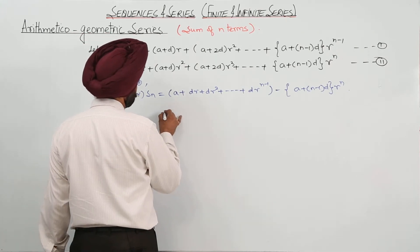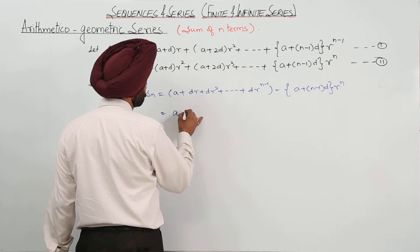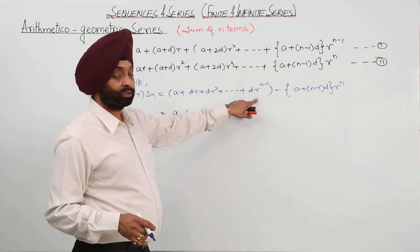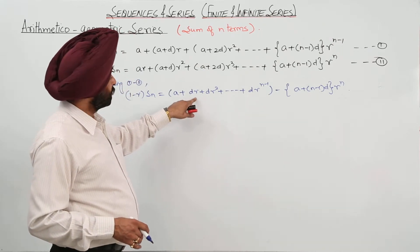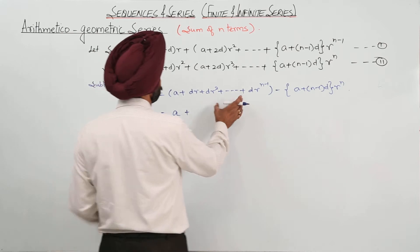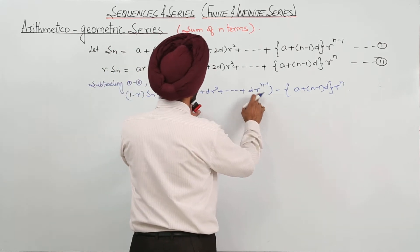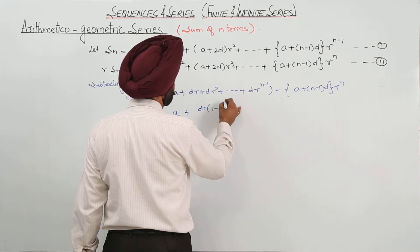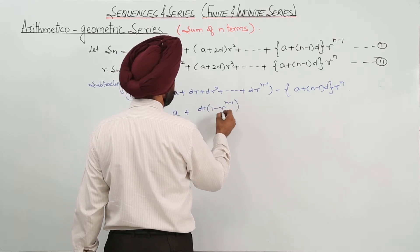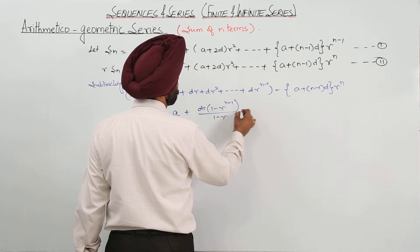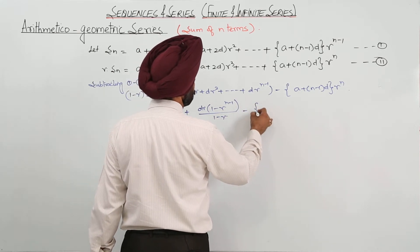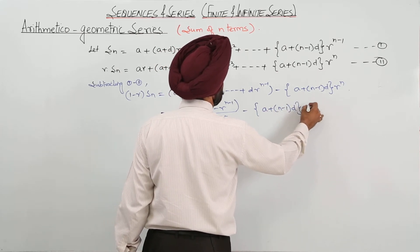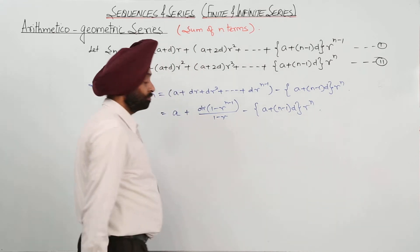Now in this expression, the first term is a as it is. After a, the remaining terms dr plus dr squared plus ... form a geometric progression series. So for that GP part, the first term is dr and we use the formula dr times (1 minus r raised to power n minus 1) upon (1 minus r), minus (a plus (n minus 1)d) r raised to power n.